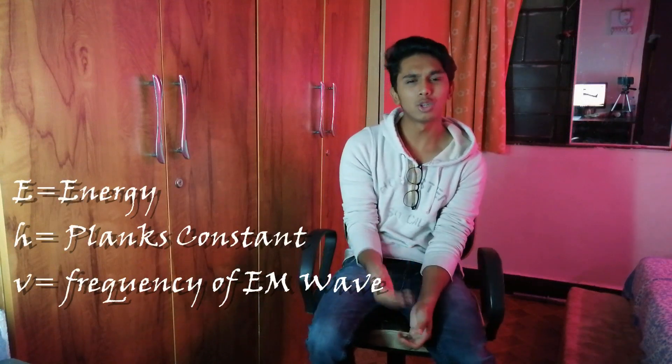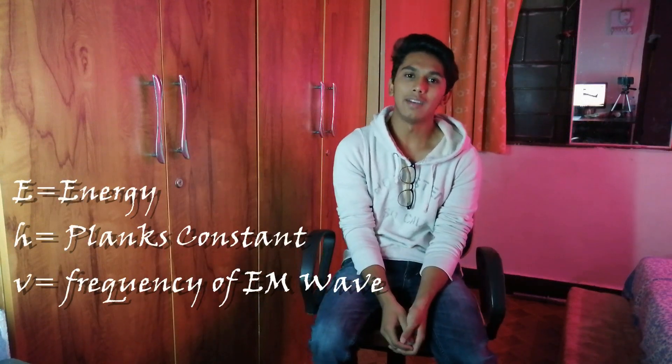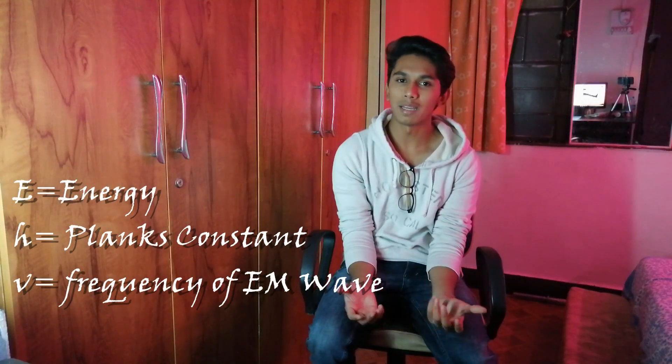We can use the formula E equals H times mu, proposed by Einstein, where E is the energy, H is Planck's constant, and mu is the frequency of the electromagnetic wave. Higher the frequency, higher the energy. This frequency is essentially a disturbance in the wave — so higher the disturbance, higher the frequency, and higher the energy. We can understand that energy is nothing but disturbance.